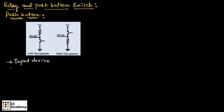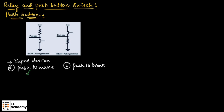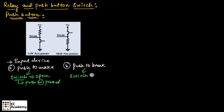Now let us understand push button. A push button is an input device which comes under two configurations: push to make and push to break. In push to make configuration, the switch is normally open and it will make a circuit contact when the switch is pushed or pressed. In push to break configuration, the switch is normally closed and it will break the circuit when the switch is pushed or pressed.